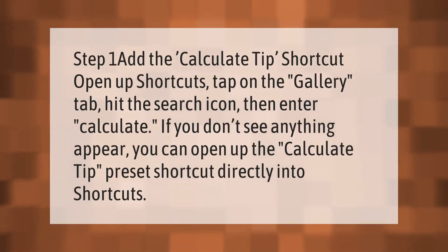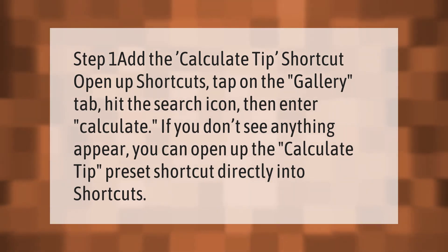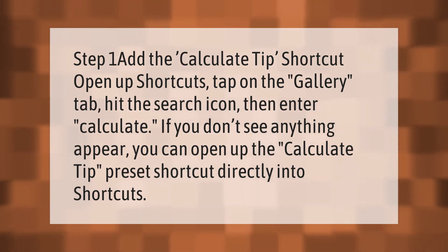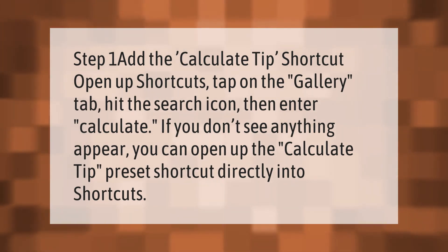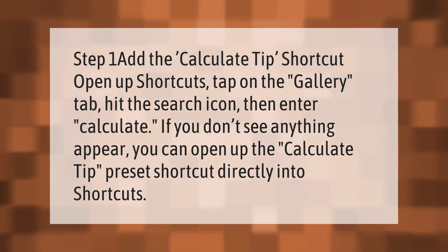Step one: add the Calculate Tip shortcut. Open up Shortcuts, tap on the Gallery tab, hit the search icon, then enter 'calculate'. If you don't see anything, you can open up the Calculate Tip preset shortcut directly into Shortcuts.